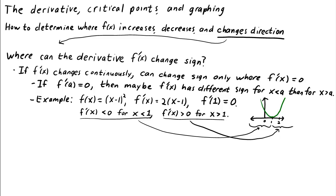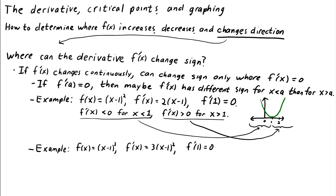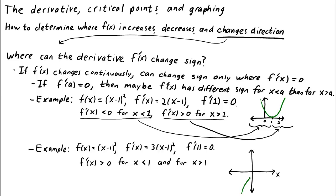Just because the derivative is zero doesn't mean the function has to change sign. For example, the function f of x equals x minus 1 cubed, with derivative f prime of x equals 3 times x minus 1 squared, has a zero derivative at x equals 1. However, f prime of x is positive for both x less than 1 and x greater than 1. Away from x equals 1, the function f of x is always increasing, as we can see from its graph.